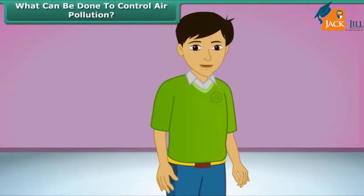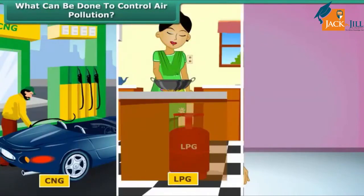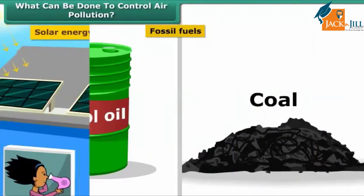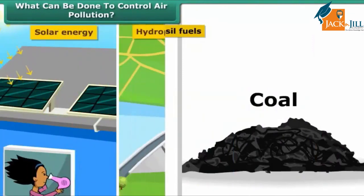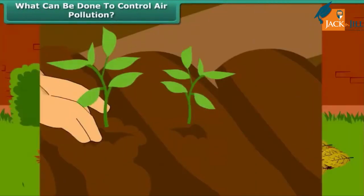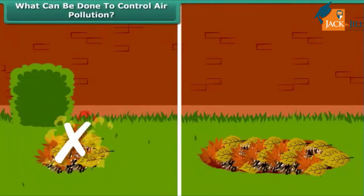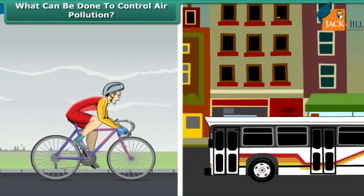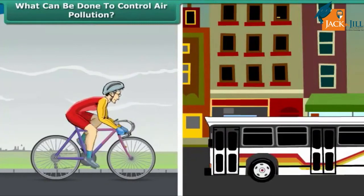To reduce air pollution, we can use clean fuels such as CNG, LPG, and unleaded petrol instead of fossil fuels. We can use solar energy, hydropower, and wind energy. We can plant new trees, and rather than burning dry leaves, put them in a compost pit. We can walk more, switch to bicycles for short distances, and use public transport.